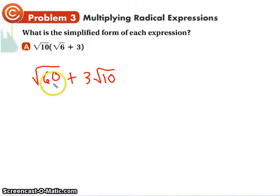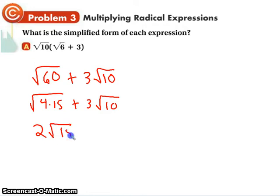Let's see. 60 is 15 times 4. Anything else? Yeah, 4 and 15. So we break this down into 4 times 15. This one can't be broken down any further. So we pull a 2 out. 2 root 15 plus 3 root 10. Nothing's the same. We're done. But we do have to go through the process of simplifying it.